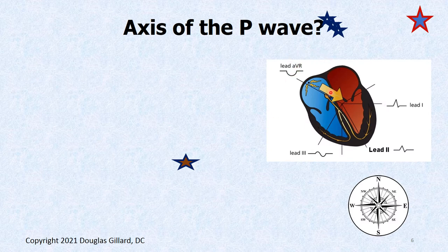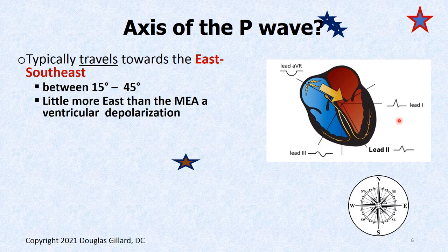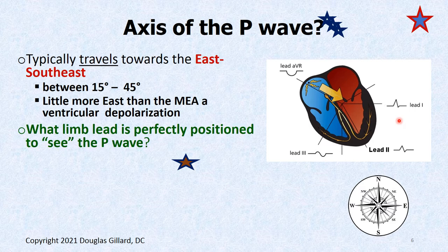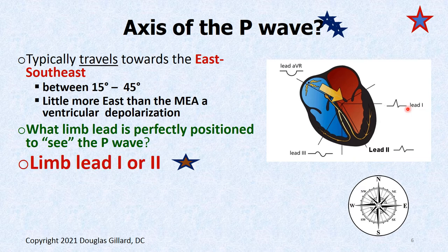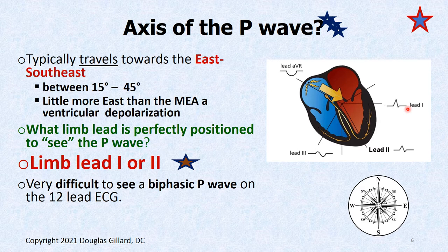The axis of the P wave — we've already talked a lot about the axis of the QRS complex, but the axis of the P wave points similarly, but a little bit more to the east. It's said to be east-southeast. What limb lead is perfectly positioned to see the average flow of current? Limb lead 1, though limb lead 2 is pretty good too. There is an axis for the P wave and an axis for the QRS complex.